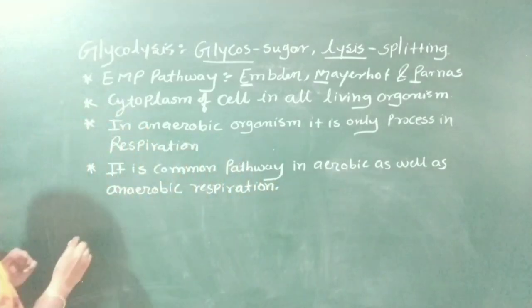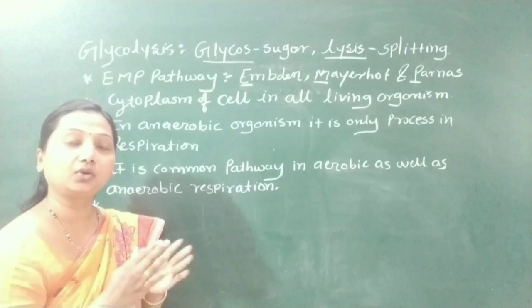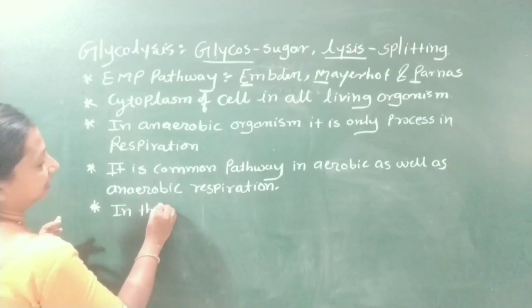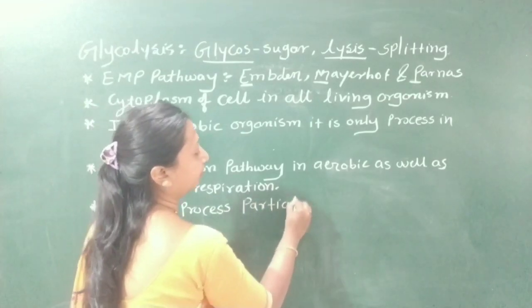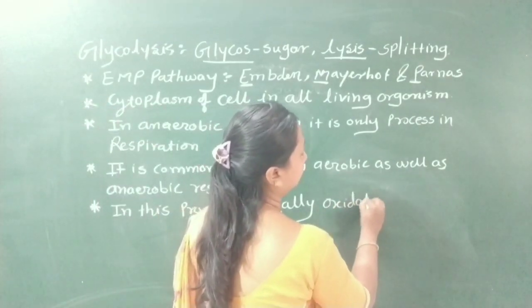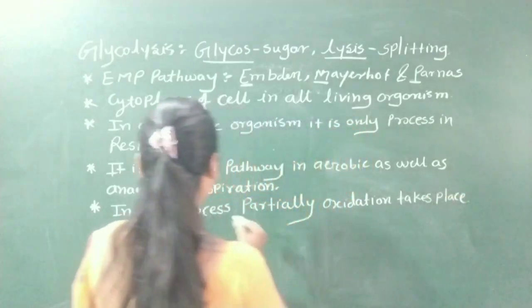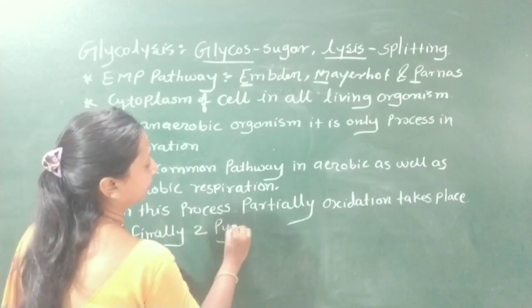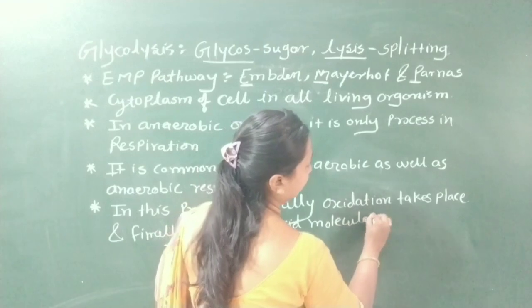In glycolysis, glucose is partially oxidized — partial oxidation takes place, not full oxidation — and finally two molecules of pyruvic acid are formed.